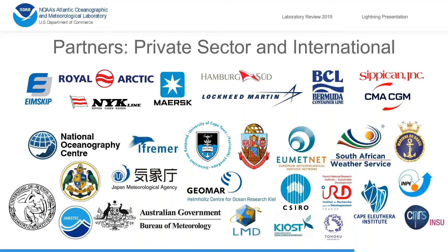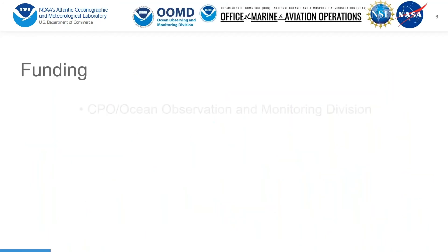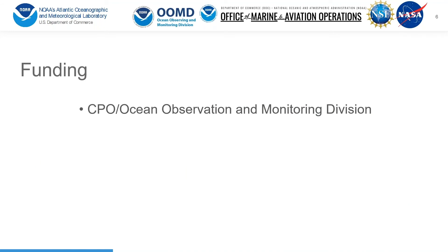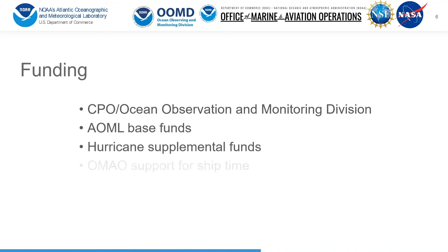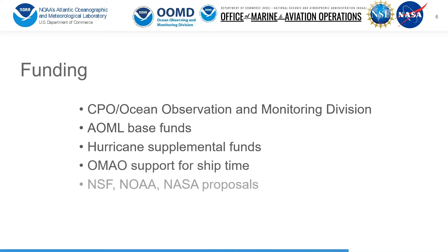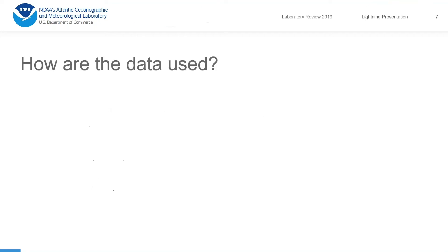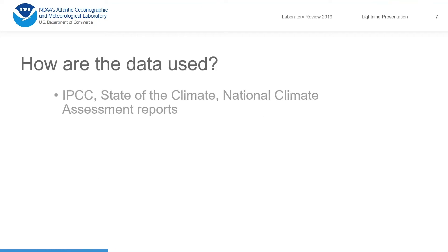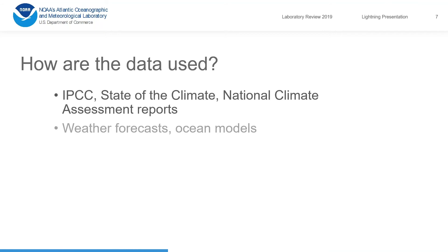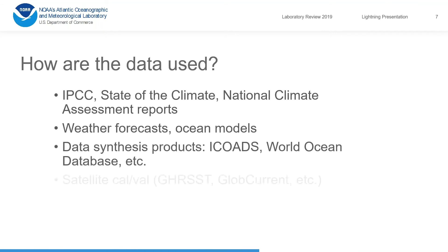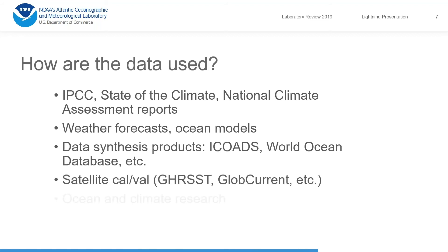If we had to rely solely on NOAA ship time to put these instruments in the water, it would be very cost prohibitive. Funding for these efforts comes from the Ocean Observations and Monitoring Division and AOML-based funds, as well as hurricane supplemental funds. We also rely heavily on OMAO support for ship time for NOAA cruises and shorter-term proposals. The data are used for climate assessments, weather forecasting, ocean state estimates, ocean improvements, data synthesis products, satellite calibration and validation, and to conduct ocean and climate research.